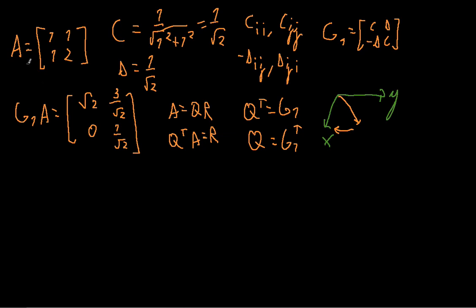I have the following matrix A: 1, 1, 1, 2, and I want to do a QR decomposition of it using the Givens rotation.